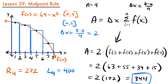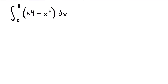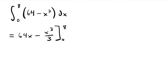Maybe you're wondering how good that approximation is — what is the actual area under this function from 0 to 8? We can use a definite integral, which gives the exact area, to compare to 344. Here's our integral: the integral from 0 to 8 of the function 64 minus x squared dx. We're going to integrate this and see what the actual area is.